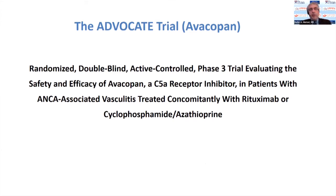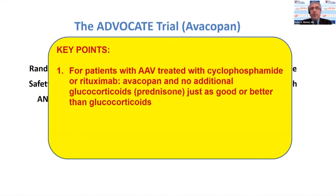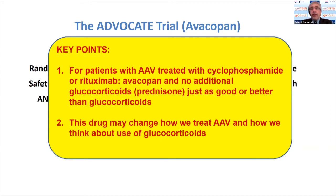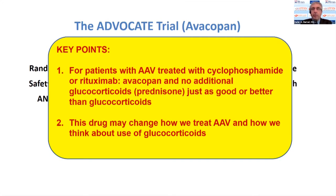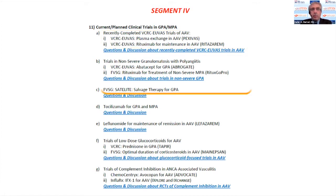The ADVOCATE study of avacopan — I was one of the key people to help run this study. This is a major advance. For patients with AAV treated with cyclophosphamide or rituximab, avacopan with no additional glucocorticoids was just as good or better than glucocorticoids alone. We think this is a way to treat patients upfront without having to use much more steroids, and it may change how we think about glucocorticoids in vasculitis and other inflammatory diseases.